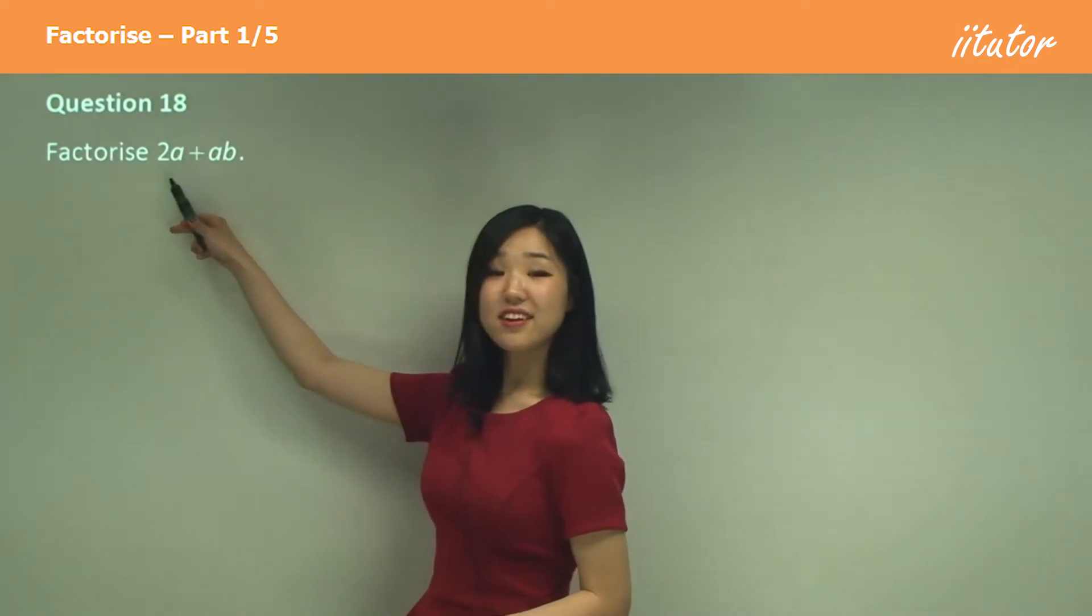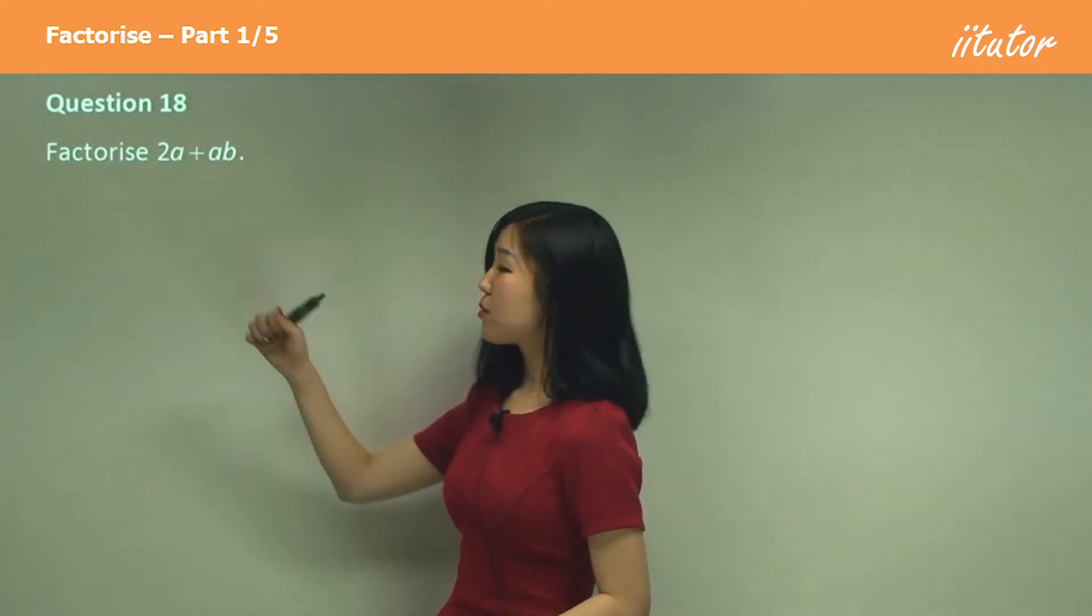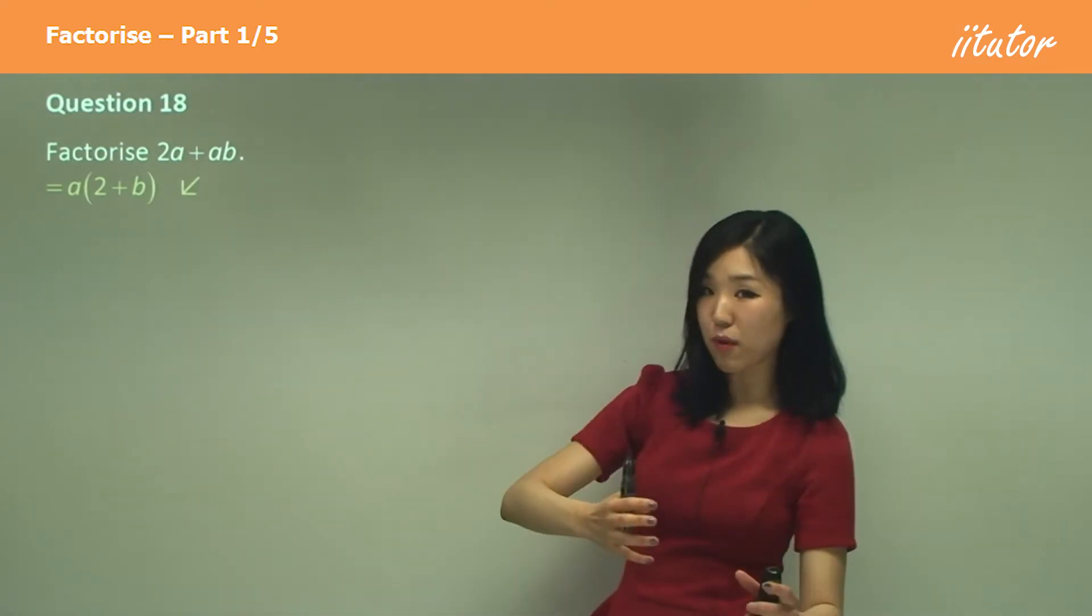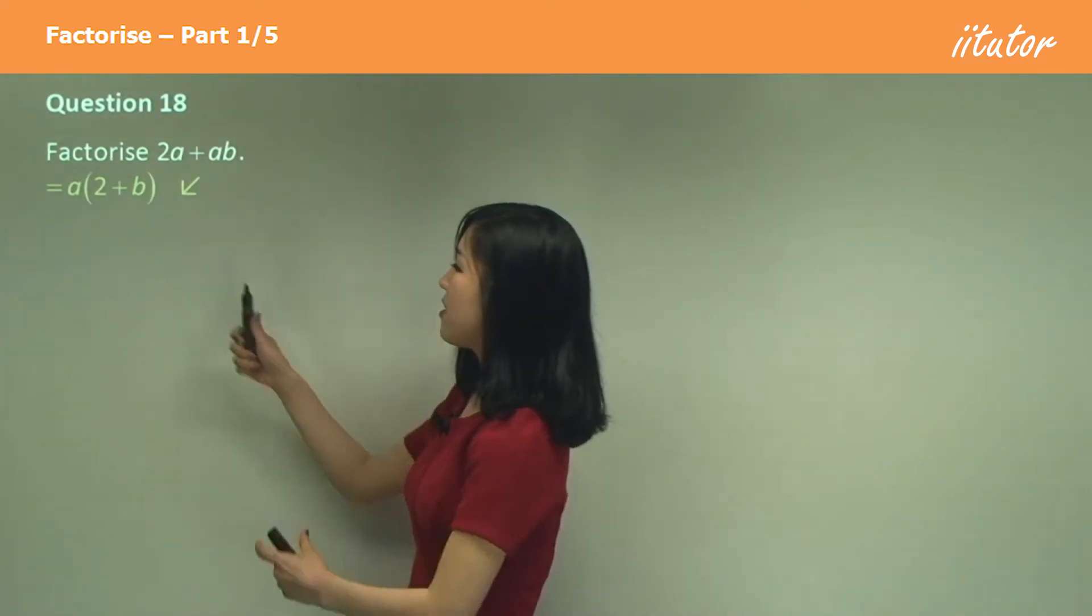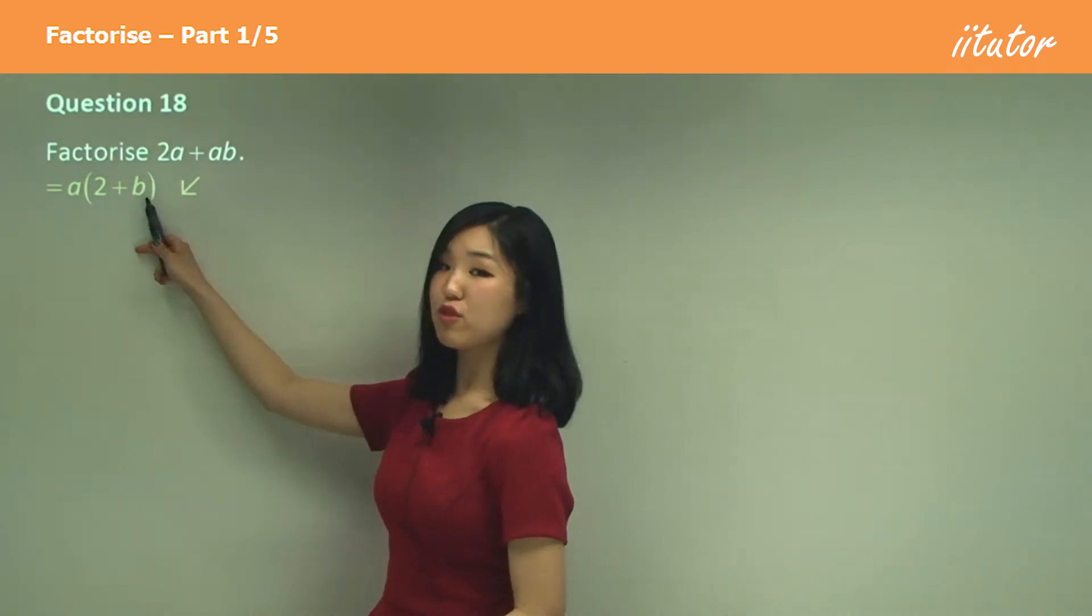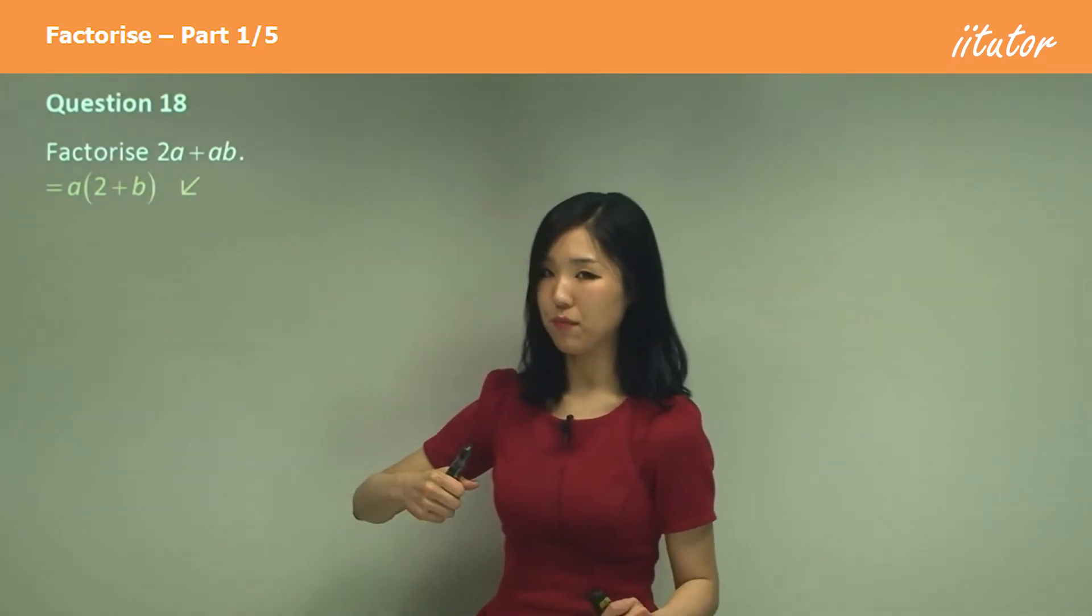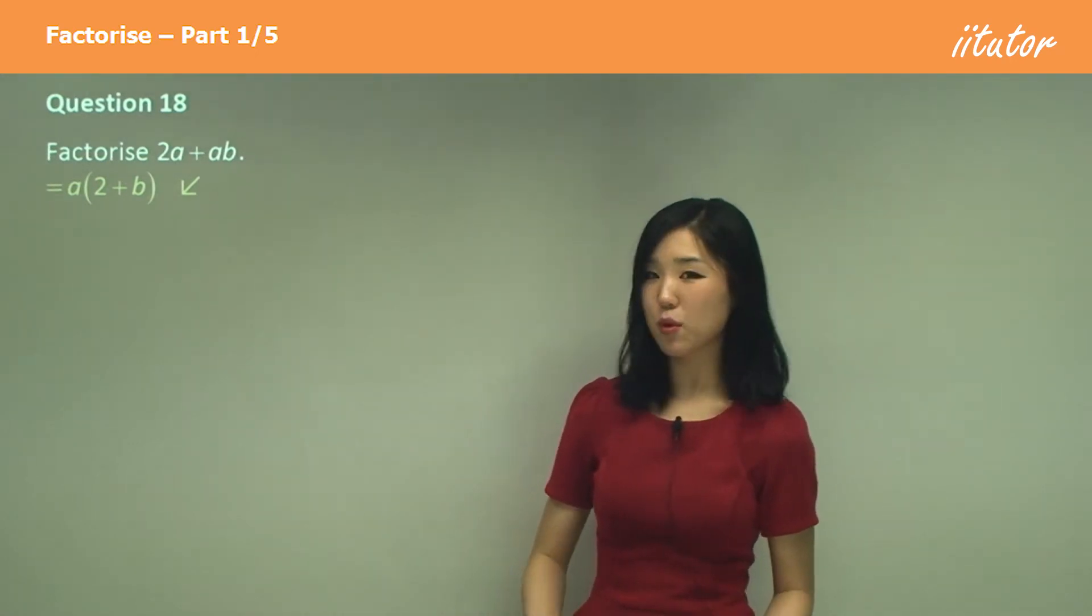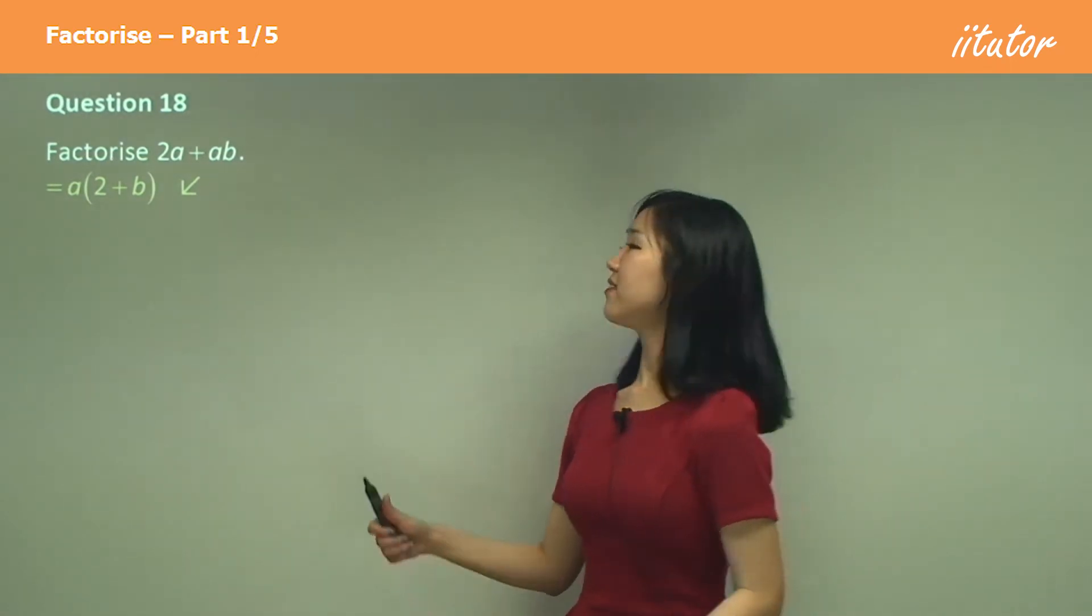See how they both have a? So a is common. What I'm going to do is take a out of the bracket, and inside the bracket you'll just have 2 left and you'll just have b left, because I took a out in each of them. Get the idea? That's what we're doing with factorising.